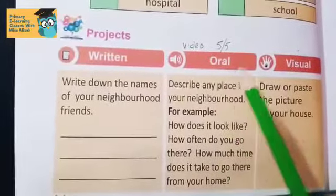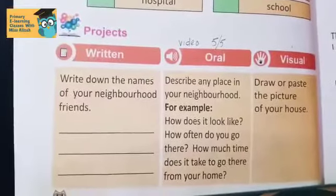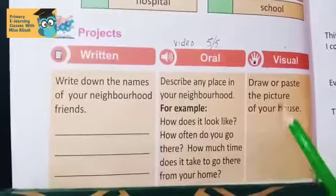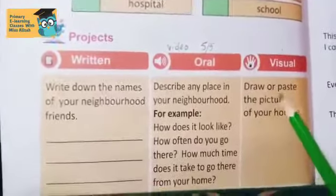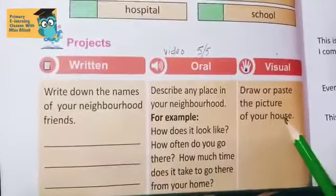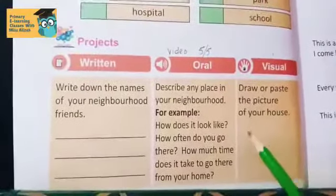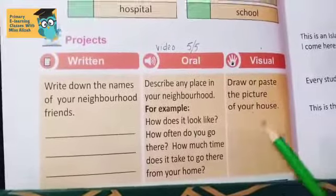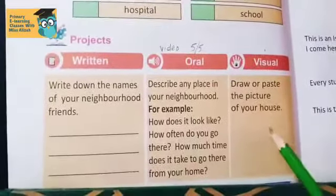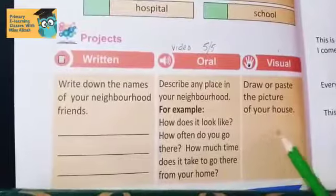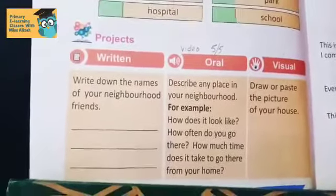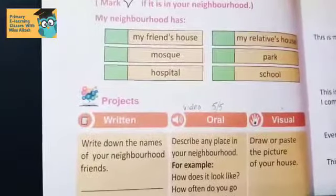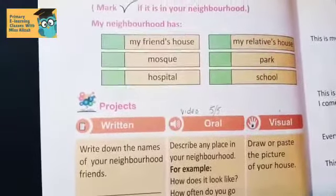The last one is Part C, which is visual. Draw or paste a picture of your house. You can draw your house or paste a picture of it over here. So you have to complete this page in this period and show it to me.